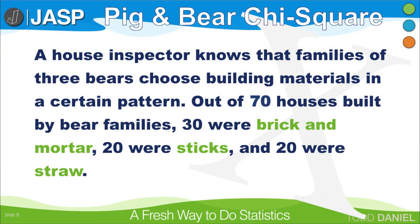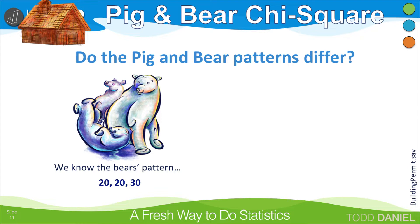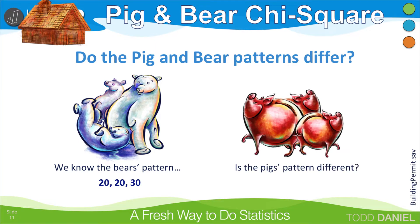A house inspector knows that families of three bears choose building materials in a certain pattern. Out of 70 houses built by bear families, 30 were brick and mortar, 20 were sticks, and 20 were straw. The house inspector then randomly samples building permits pulled by 70 little pigs who were building houses, to determine whether a pattern exists in the materials that the little pigs chose for housing construction. Our research question is: do the pig and bear building permit patterns differ significantly? We know the bears' pattern. Is the pigs' pattern different?